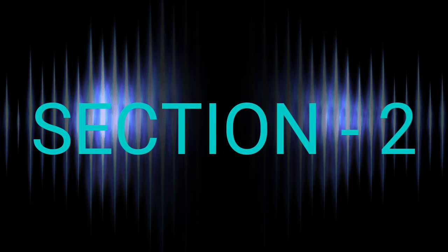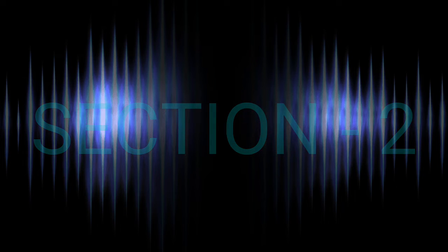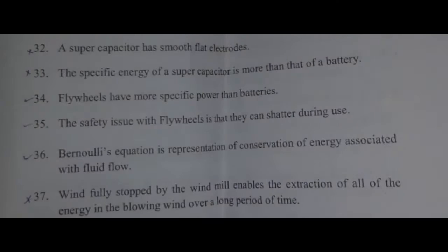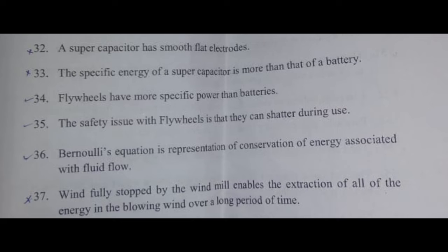Section B contains questions in the form of true or false. A battery is a collection of cells connected in series or parallel. The open circuit voltage is related to the thermodynamics associated with the system. The focus of most international efforts on fuel cells is PEM and SOFC. Fuel processing in the context of fuel cells is the conversion of a fuel into a hydrogen-rich stream. The polarization curve gives information about the performance of fuel cells under a wide range of current density conditions. Gas diffusion layers help distribute the reactants across the electrode area in PEM fuel cells. A supercapacitor has smooth flat electrodes. The specific energy of a supercapacitor is more than that of a battery. Flywheels have more specific power than batteries. The safety issue with flywheels is that they can shatter during use. Bernoulli's equation is a representation of conservation of energy associated with fluid flow.